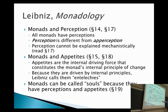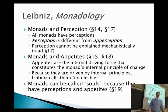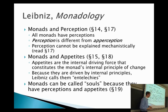He says that we can call these things souls — these monads — because they have perceptions and appetites, which he thinks is sort of sufficient for something being a soul. But at the same time, they're not souls entirely like you and I. They don't have self-awareness; they aren't rational creatures like you and I are.